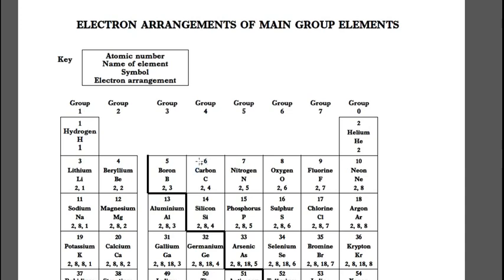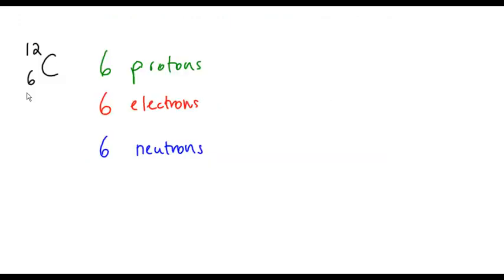So that's the number of protons, which is also equal to the number of electrons. So for carbon-12, we have 6 protons, 6 electrons, and 6 neutrons.